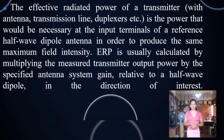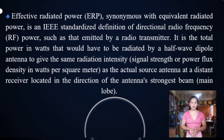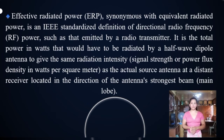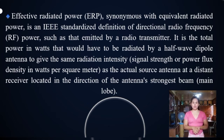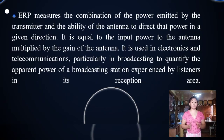Relative to a half-wave dipole in the direction of interest. Effective radiated power, or ERP, synonymous with equivalent radiated power, is an IEEE standardized definition of directional radio frequency power such as that emitted by a radio transmitter. It is the total power in watts that would have to be radiated by a half-wave dipole antenna to give the same radiation intensity, signal strength, or power flux density in watts per square meter as the actual source antenna at a distant receiver located in the direction of the antenna's strongest beam or main lobe. ERP measures the combination of the power emitted by the transmitter and the ability of the antenna to direct that power in a given direction.